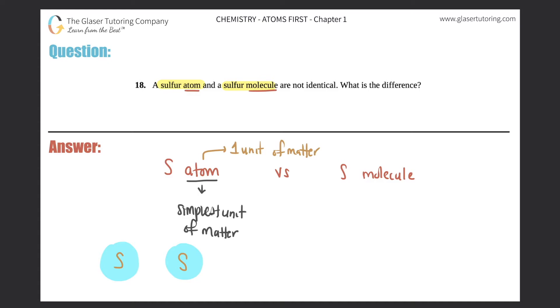Molecule on the other hand is when you have multiple atoms coming together. Now you can have multiple of the same atom coming together or you could have multiple of different atoms coming together. Now here they just want you to talk about a sulfur molecule, so we have to stay within the parameters of what they're asking for.